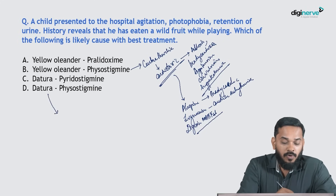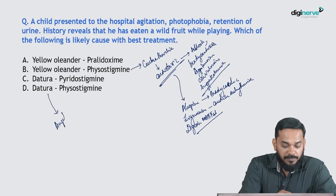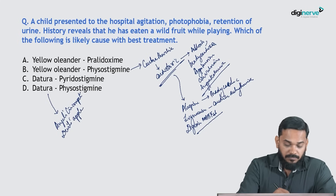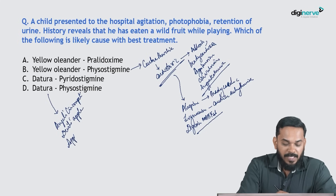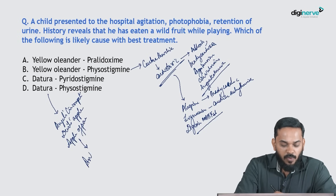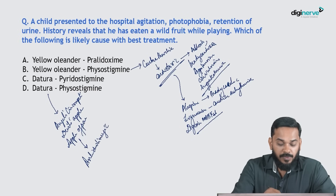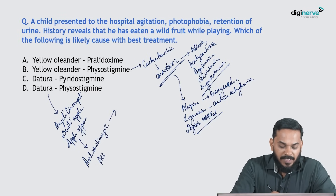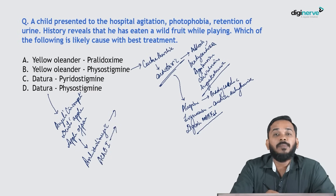Datura is also known by other names: angel's trumpet, devil's apple, and apple of Peru. Datura is an anticholinergic agent, and ingestion produces anticholinergic symptoms. Acetylcholinesterase inhibitors that cross the blood-brain barrier are the treatment of choice for datura poisoning.